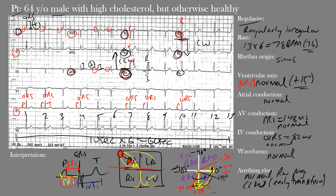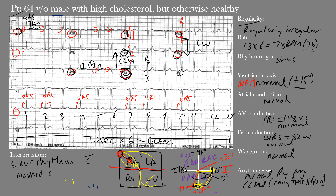So what is our final interpretation? We have a regularly irregular rhythm with sinus origin, occurring at a normal rate with a normal axis, along with normal atrial, AV, and IV conduction, and no major waveform abnormalities. This is a case of sinus arrhythmia — specifically sinus rhythm with marked sinus arrhythmia.